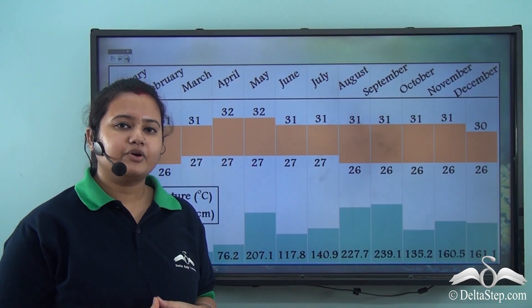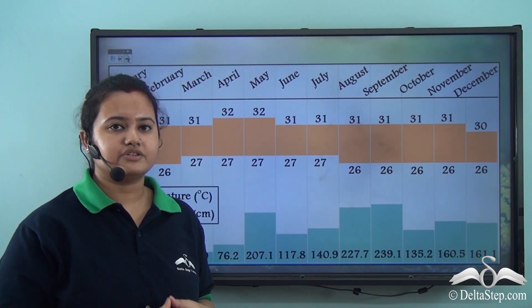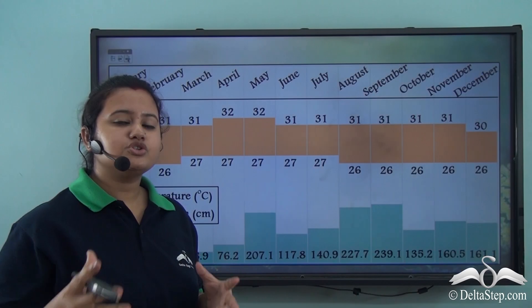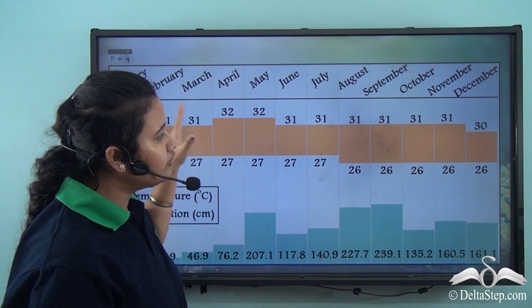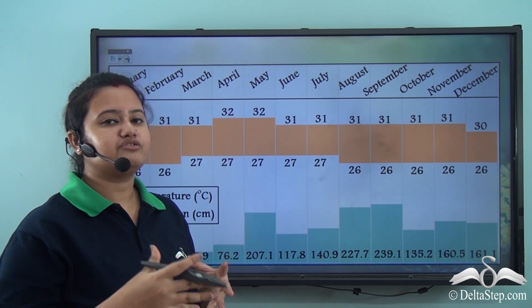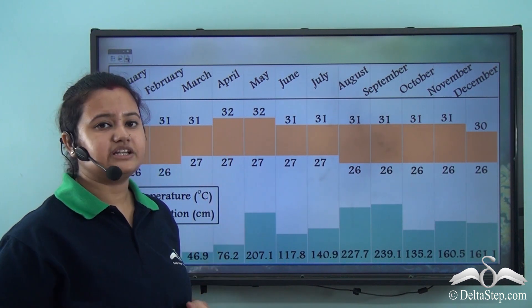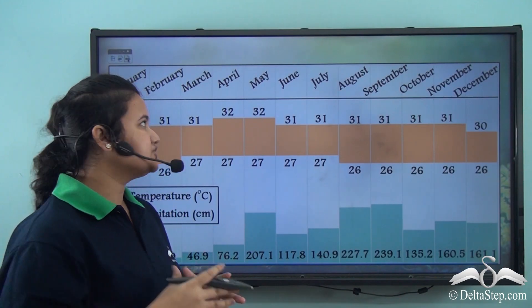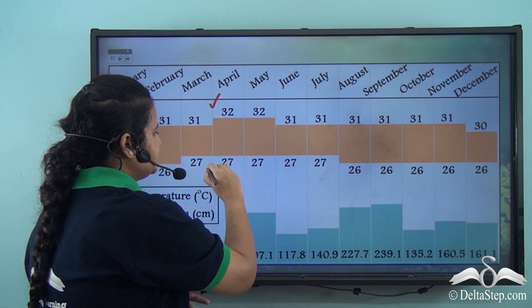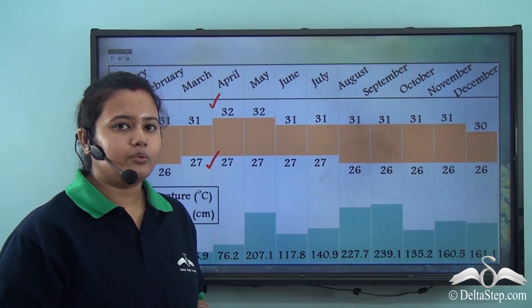This chart summarizes the temperature and precipitation pattern of the equatorial rainforest. As discussed, the equatorial rainforest has uniformly high temperature throughout the year. The average temperature ranges between 30 to 35 degrees Celsius. Also, the variation between day and night temperature — the diurnal range of temperature — is usually very low.